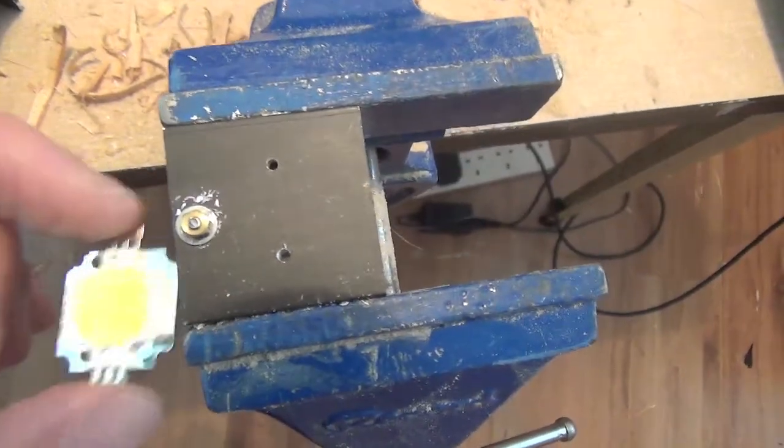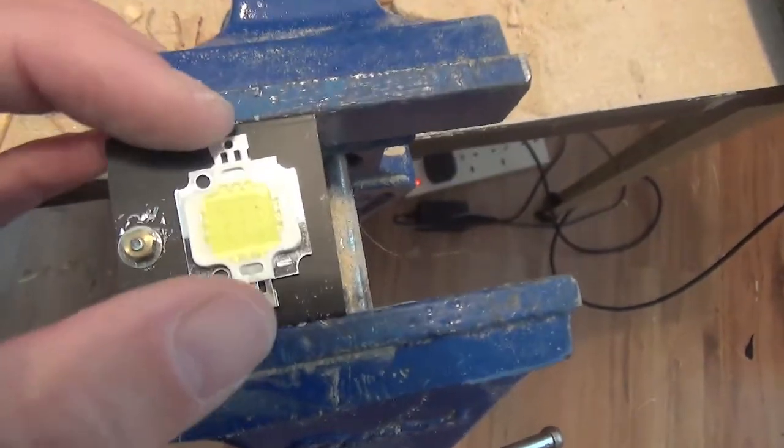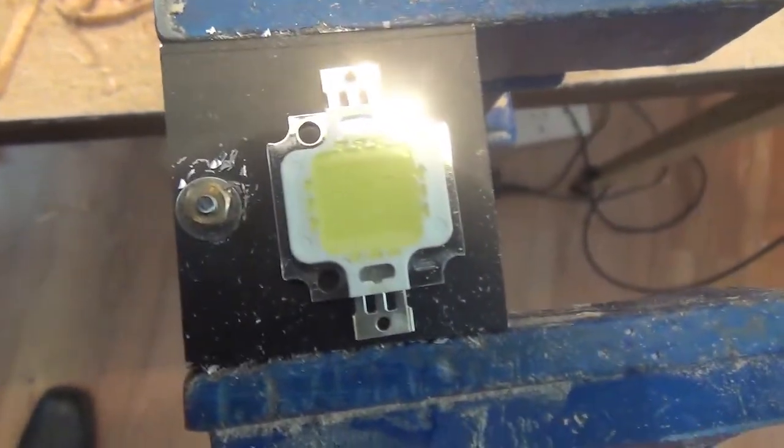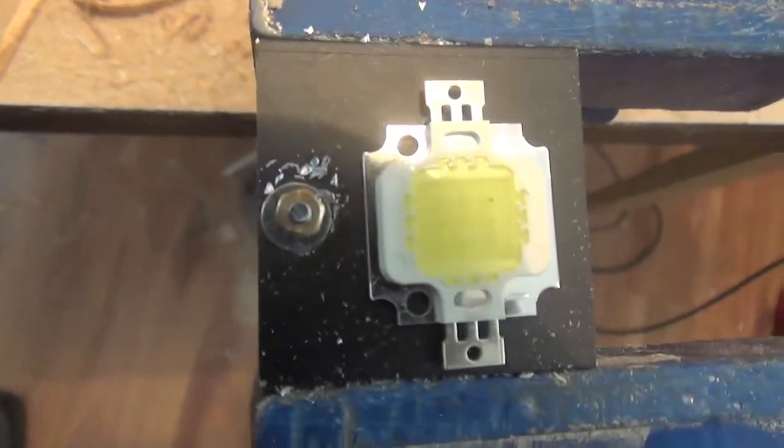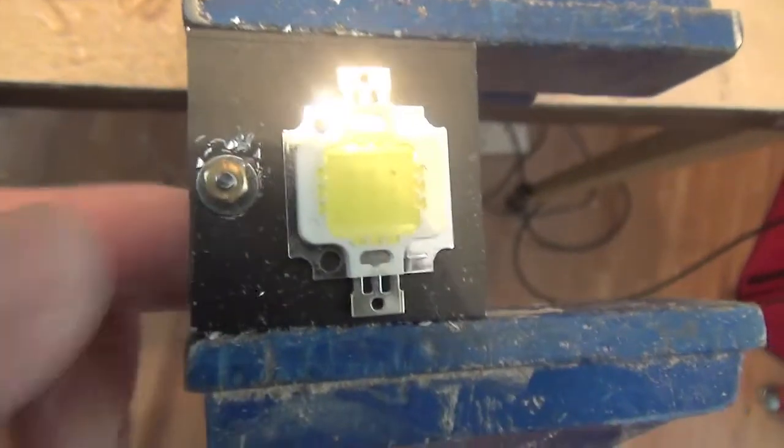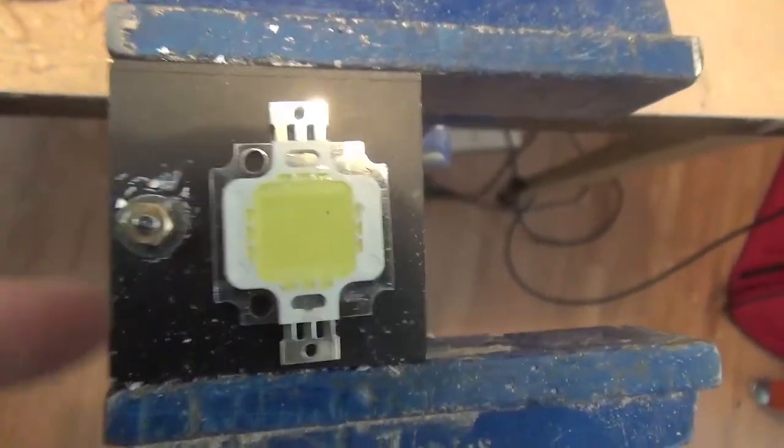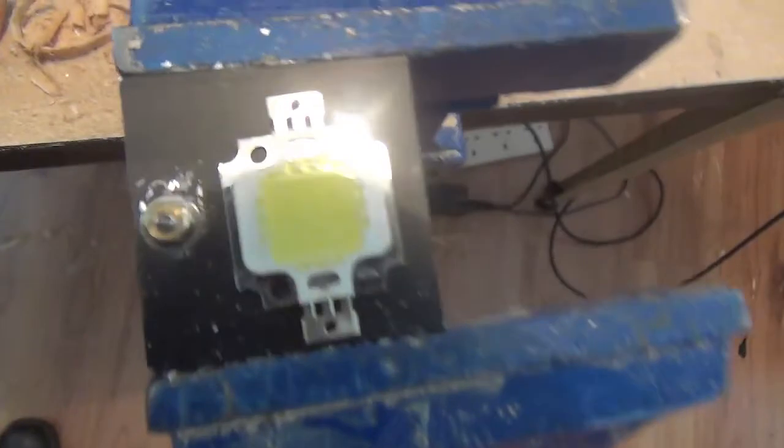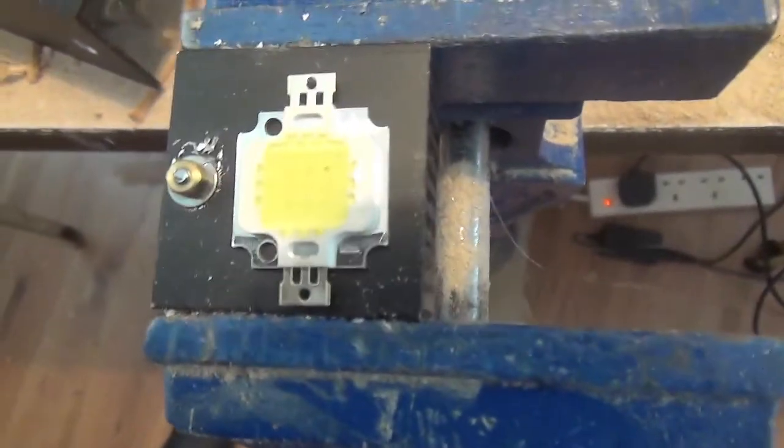Just drilled the holes for that to screw onto there. If I can find some tiny self-tappers. Can't use nuts and bolts because there's a fin on the back of that heat sink. I've drilled that hole. A little bolt in there to hold that to a piece of aluminum, so it will position it on the old halogen stand. So it shouldn't be too difficult.